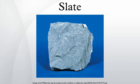Slate is frequently gray in color, especially when seen en masse covering roofs. However, slate occurs in a variety of colors even from a single locality. For example, slate from North Wales can be found in many shades of gray, from pale to dark, and may also be purple, green or cyan. Slate is not to be confused with shale, from which it may be formed, or schist.